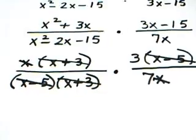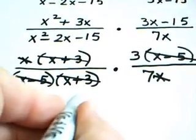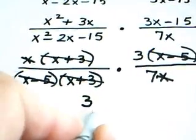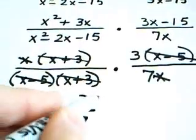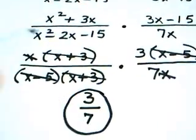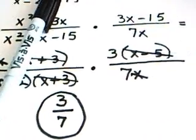So notice what you're left with after all of this cancels out. You have a 3 in the numerator. You have a 7 in the denominator. So our final answer to that problem is 3 sevenths.